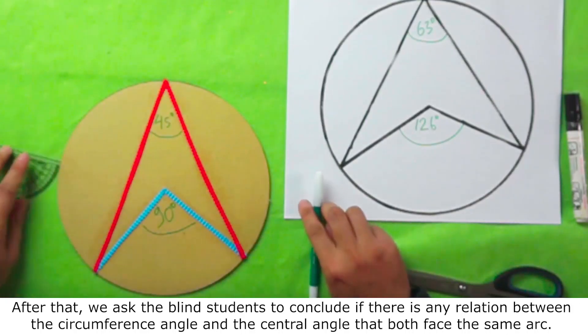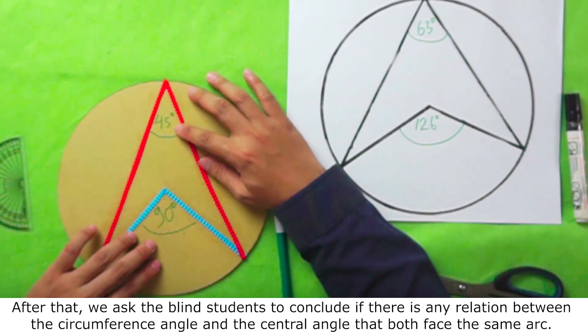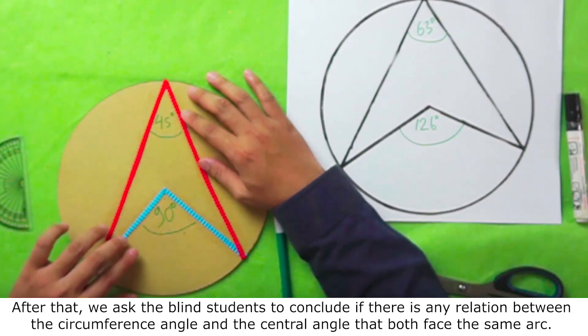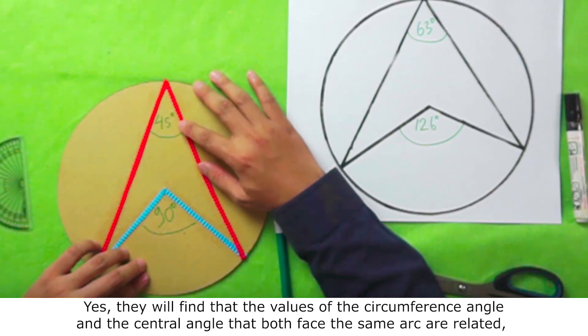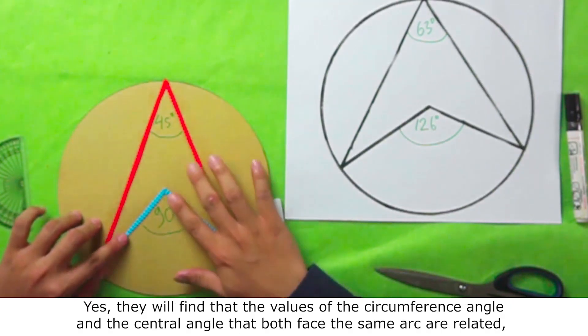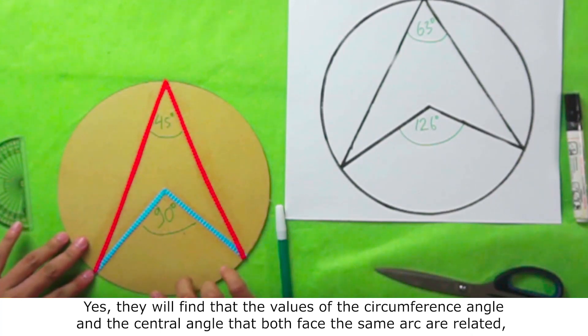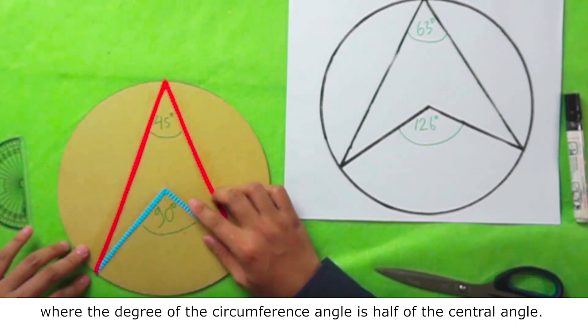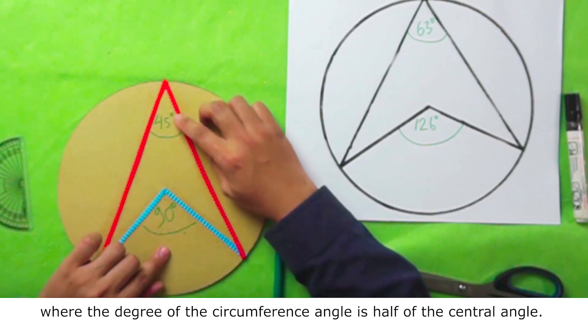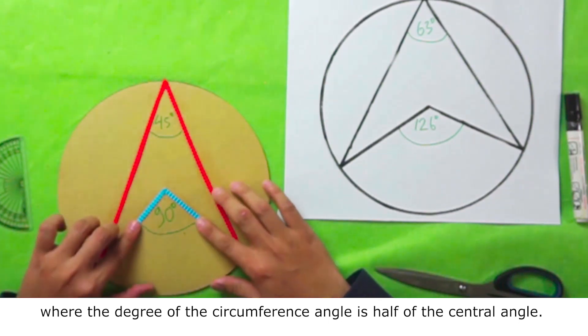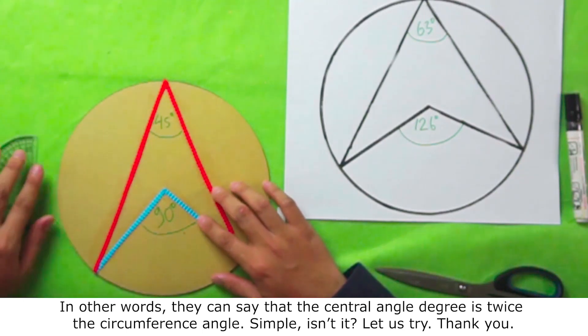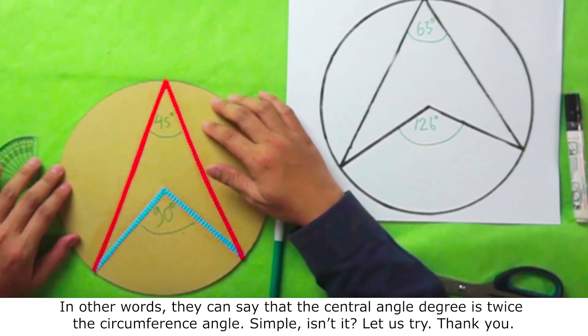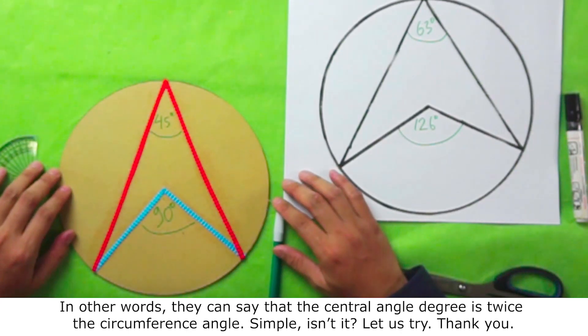After that, we ask the blind students to conclude if there is any relation between the circumference angle and the central angle that both face the same arc. Yes, they will find that the values of the circumference angle and the central angle that both face the same arc are related. Where the degree of the circumference angle is half of the central angle. In other words, they can say that the central angle degree is twice the circumference angle. Simple, isn't it? Let us try. Thank you.